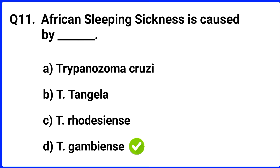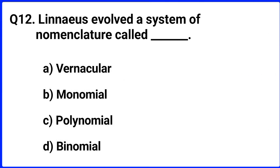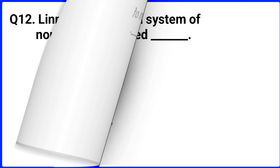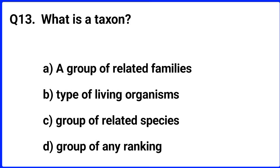Question number twelve. Linnaeus evolved a system of nomenclature called? The right answer is option D: binomial nomenclature.